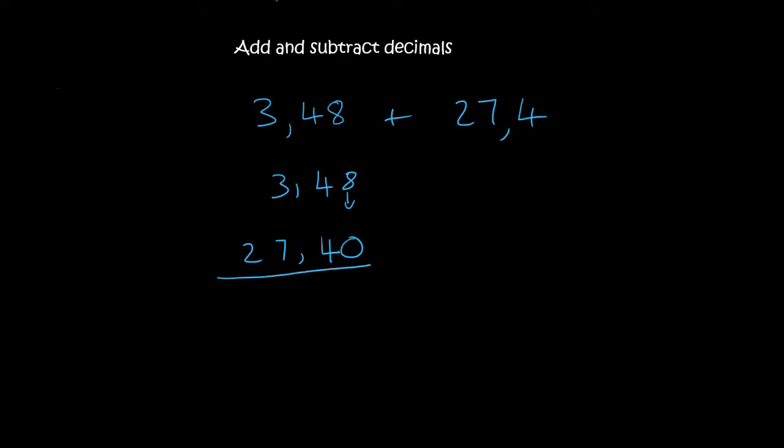Then what do you do for the 8? Well, you put a 0 there. You see? What's important is that the comma is above. Then the first number next to the comma for this one was a 4, and the first number next to this one was a 4. So they must be above each other.